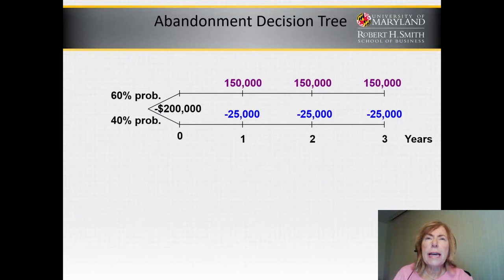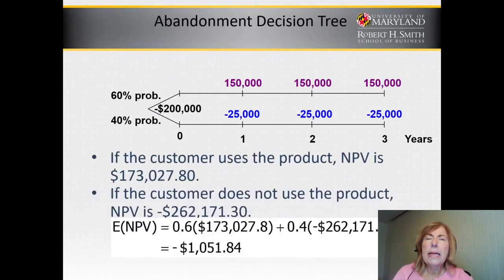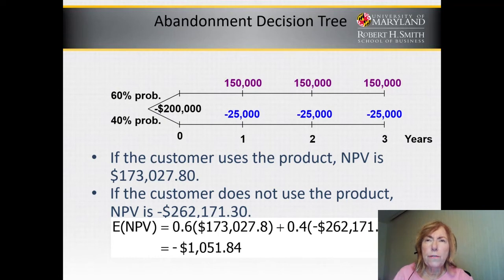Lastly, we calculate the expected NPV of this real option. We do that by taking 60% of $173,000 — the NPV under the 60% probability of success scenario — and adding it to 40% of negative $262,000 under the 40% failure probability. This results in an expected NPV of negative $1,051.84.